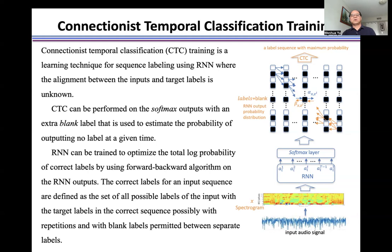The correct labels for input sequence are defined as the set of all possible labels of the input with target labels in the correct sequence, possible with repetitions and with blank labels permitted between separate labels. This is the output from softmax function layer with blank labels.